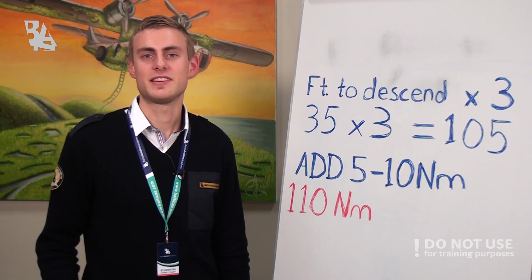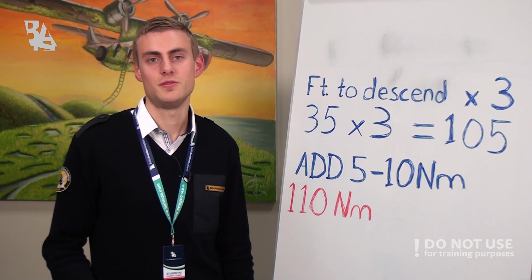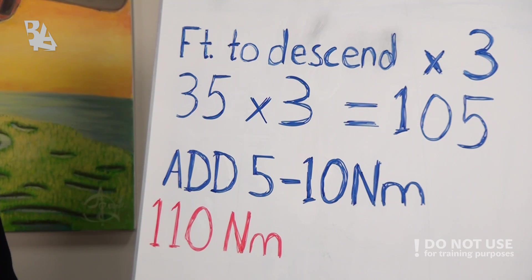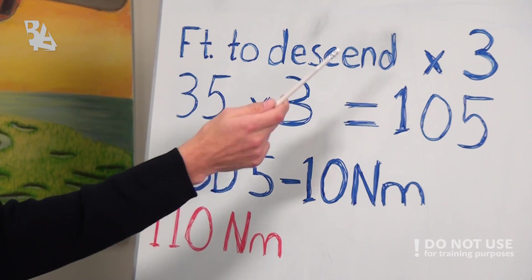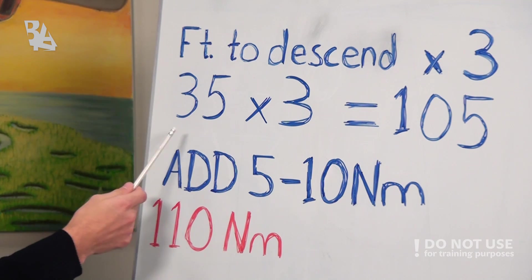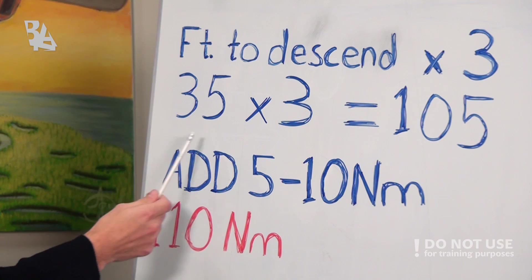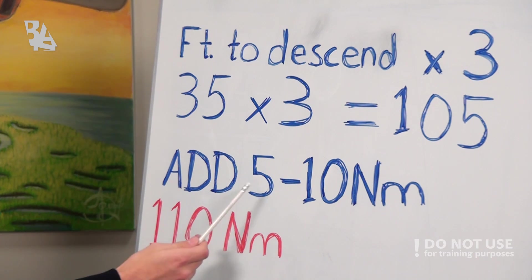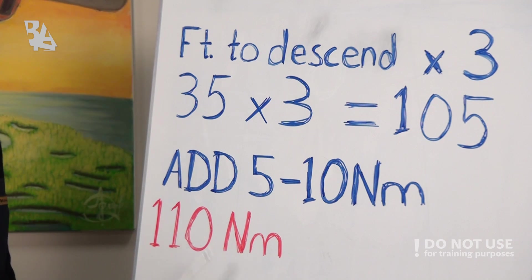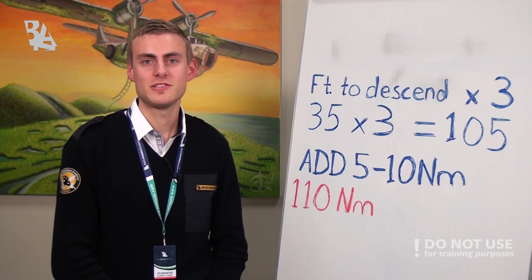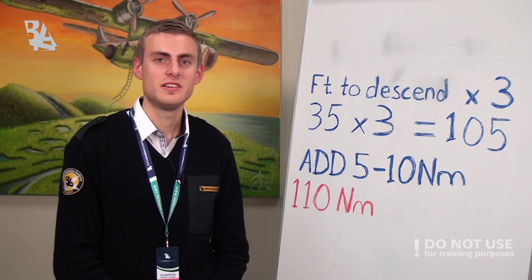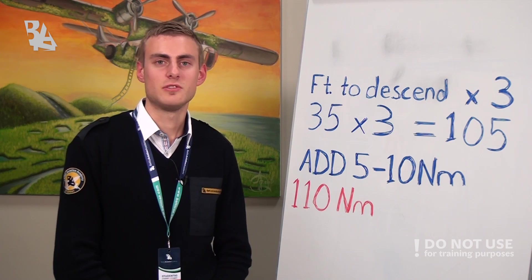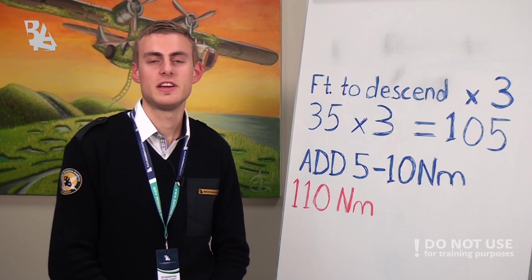The top of descent is the calculated transition from the cruise phase of the flight to the descent phase. One method to calculate when to start our descent is to take the number of feet we want to descend and multiply by 3. For example, if we are at 35,000 feet, we multiply 35 by 3 to get 105 nautical miles, then add 5 to 10 nautical miles to be safe — so 110 nautical miles from our destination. This is mostly used for double-checking that your FMC is calculating the right top of descent, since it calculates with more precision using winds and optimum speeds.